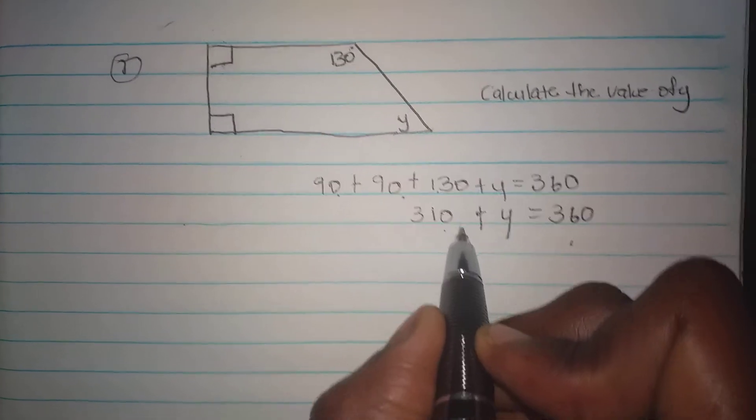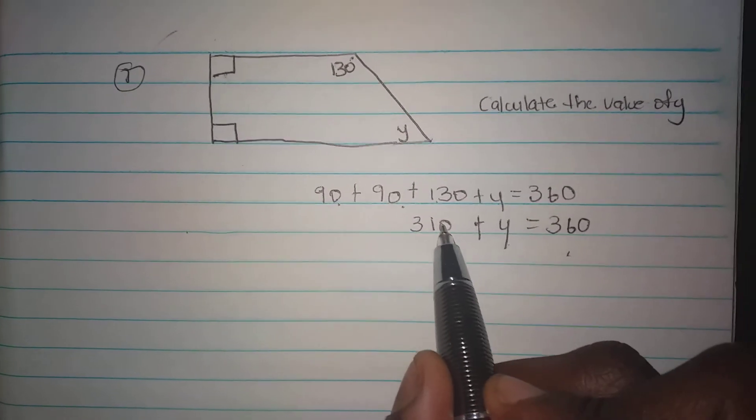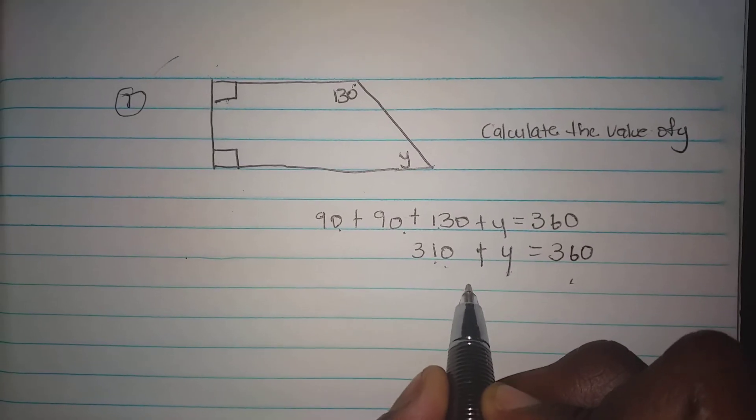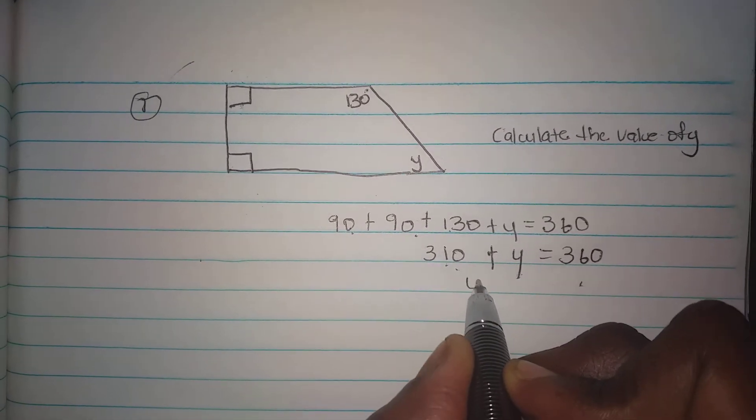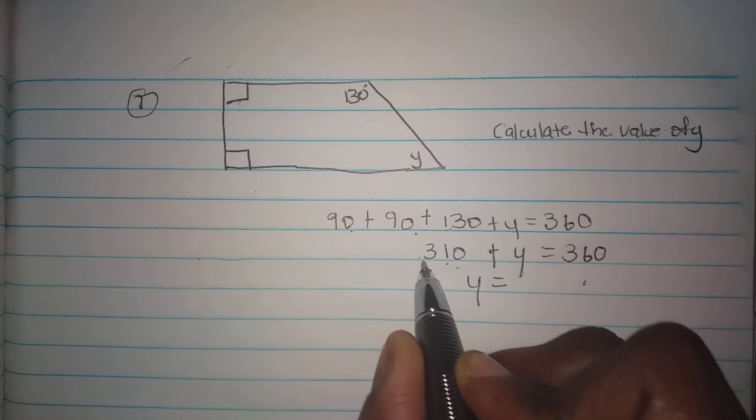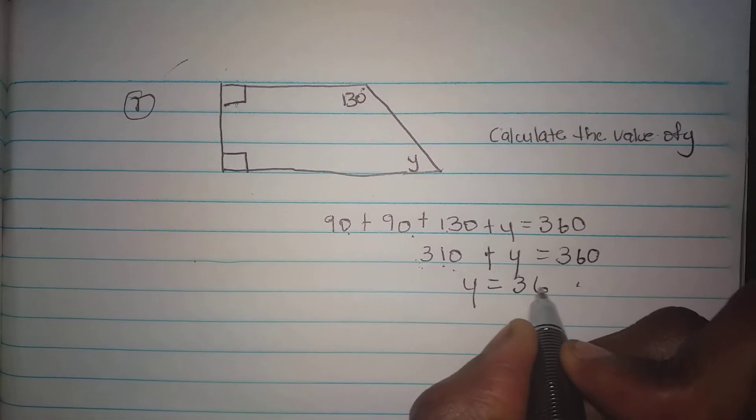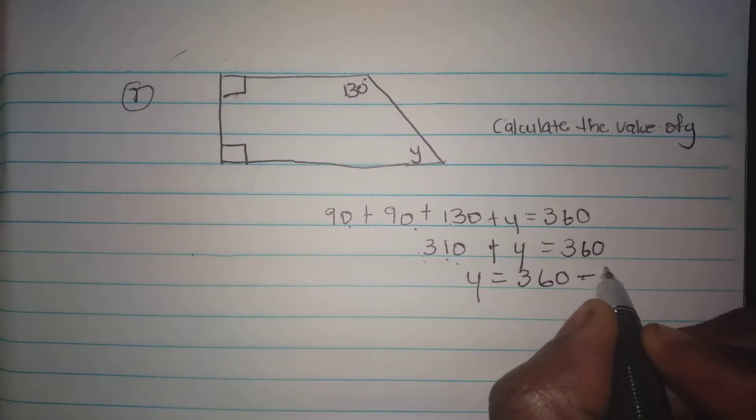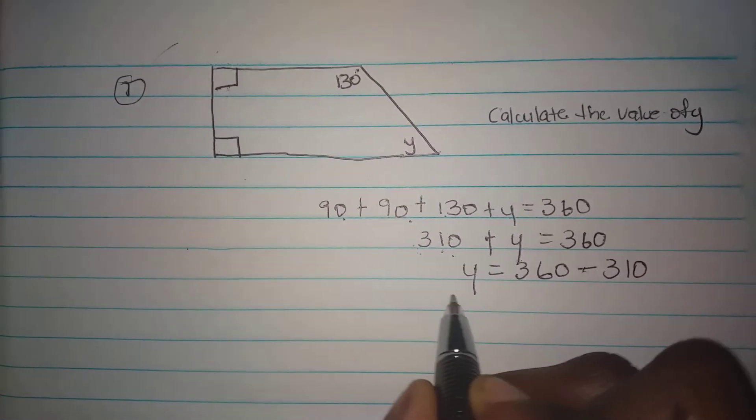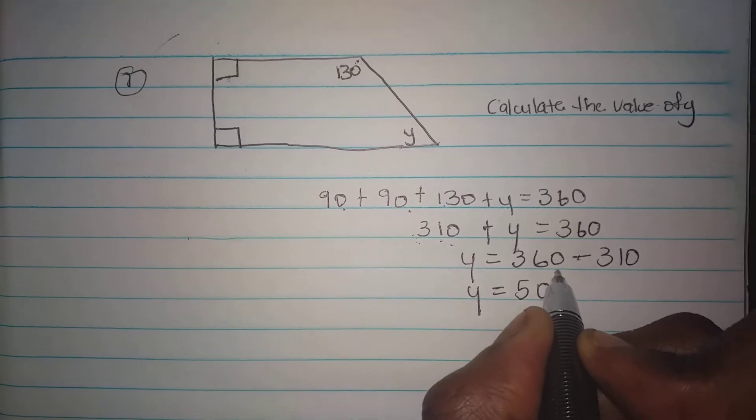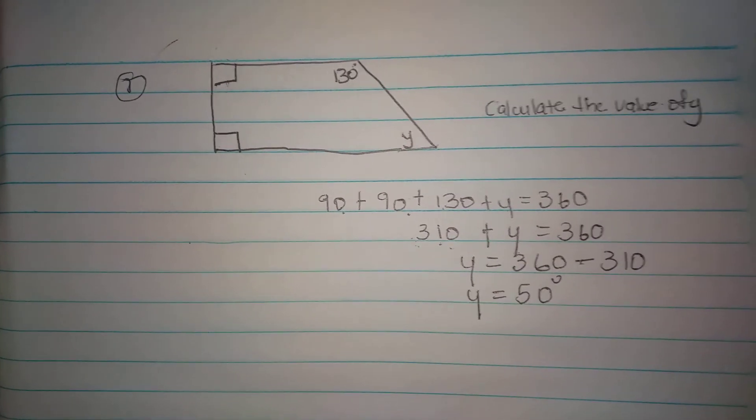I'm going to subtract 310 from both sides to balance the equation, so I have y by itself. If I subtract 310 over here, this is gone, so it's going to be 360 minus 310. Y is equal to 50 degrees, and that's my answer.